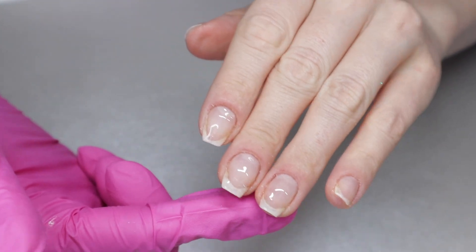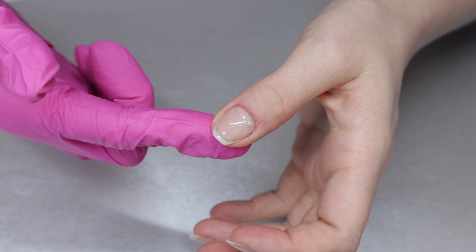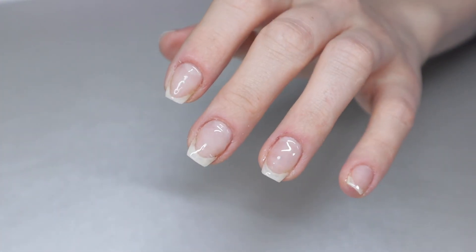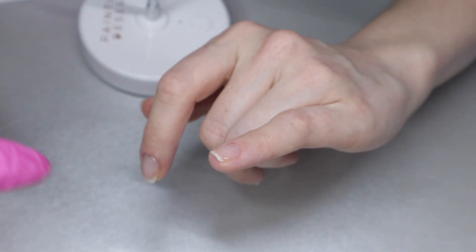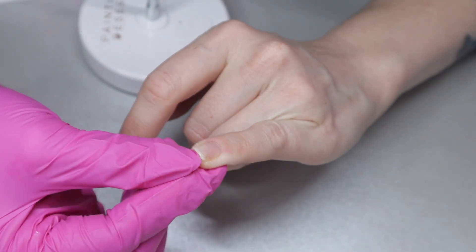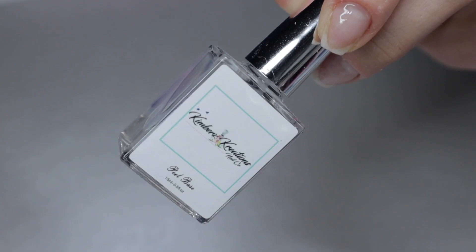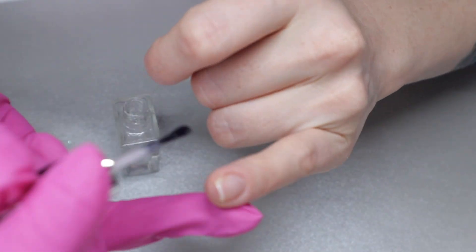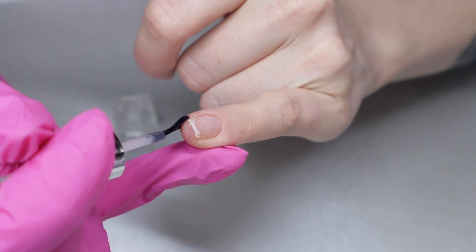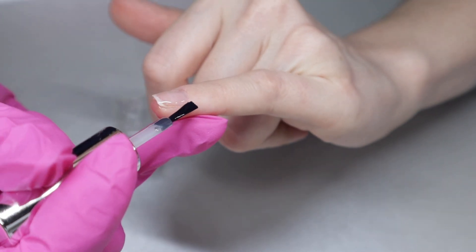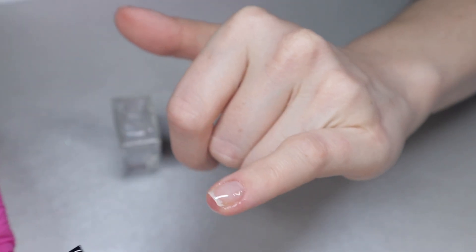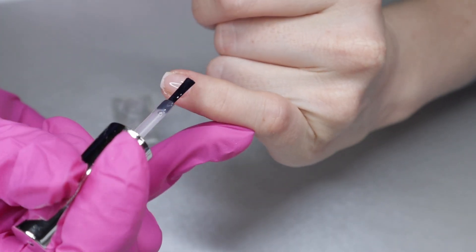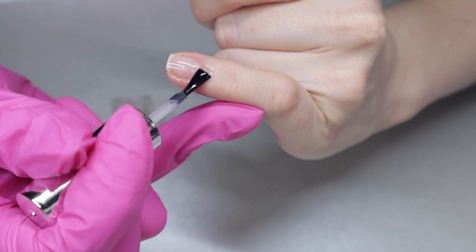I'm going to be working from my pinky all the way to my thumb, but I want to show you guys a quick little hack if you are worried about getting gel on your skin or if you have ultra short nails. Take some peel-off base coat and apply it around your skin and let that completely dry. This will ensure that any areas where the gel tends to seep won't come in direct contact with your skin.